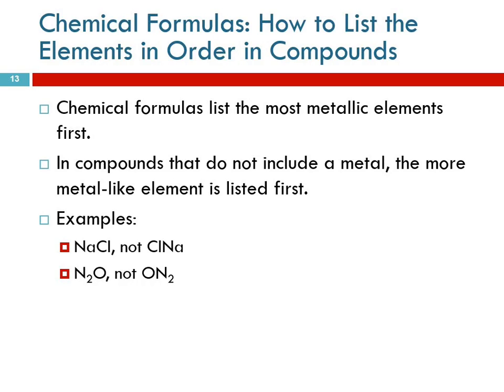How do you decide which element goes first in the formula? Usually we put the most metallic element first. If there's no metal, we put the one closest to the metals on the periodic table. So for sodium chloride, we write NaCl, not ClNa — I'll know what you mean, but it looks ridiculous.